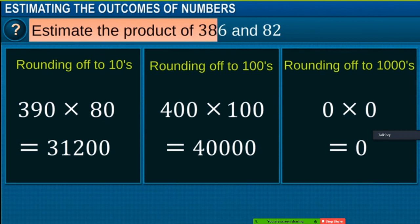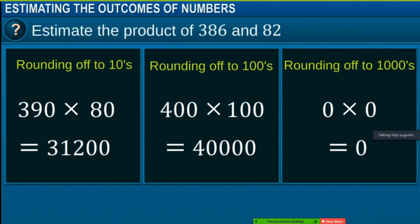We can see that there is a vast variation in the estimates. Rounding off to the nearest thousands is not a good estimation here. Rounding off to the nearest tens is a good estimate, however it may be a bit time-consuming. Rounding 386 to the nearest hundreds, that is to 400, and rounding 82 to the nearest tens, that is 80, gives the estimate of the product as 32,000. This is both a good and quick estimate. There are no rigid rules for estimating the outcomes of operations; the procedure depends on the degree of accuracy required and how quickly the estimate is needed.